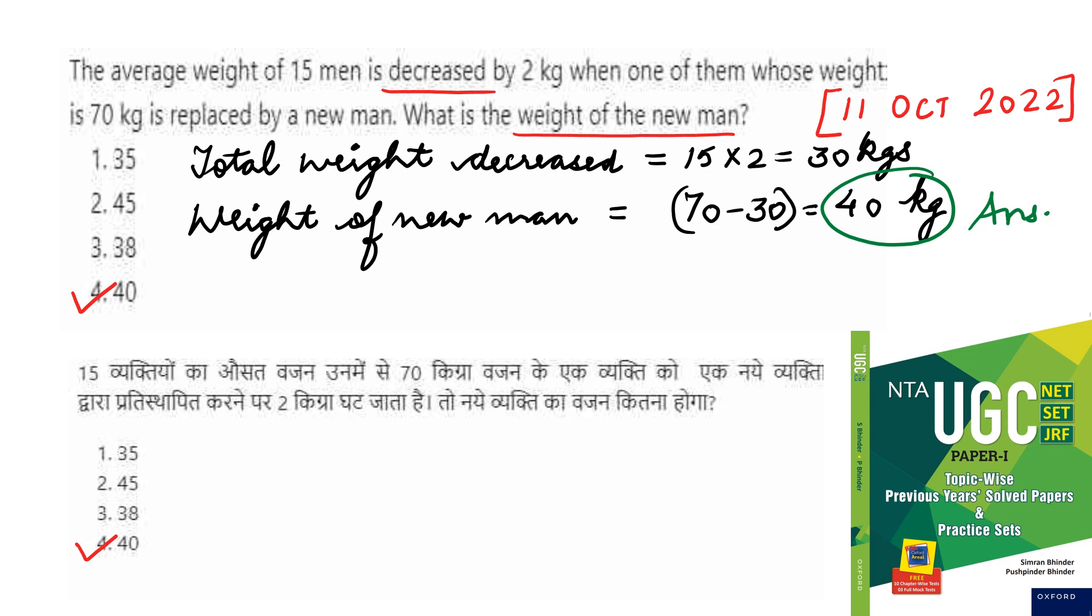Now, the last question was based upon increased by 2 kg. So, this is a question based upon decreased by 2 kg. This is also a latest UGC net examination question from 11th October 2022. You can see the average weight of 15 men is decreased by 2 kg when one of them whose weight is 70 kg is replaced by a new man. What is the weight of the new man? You can apply the above method. So, in this case, total weight decreased is equal to 15 into 2, 30 kg. Average weight has decreased by 2 kg, so total weight has decreased by 30 kg.